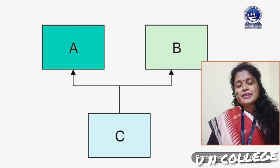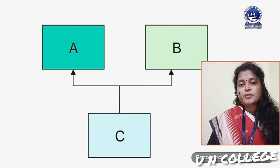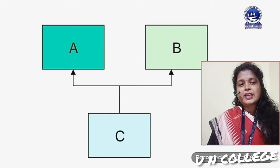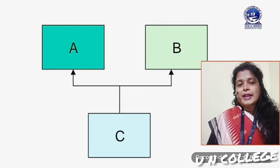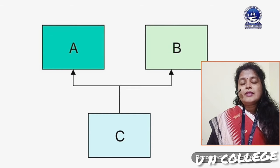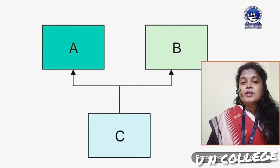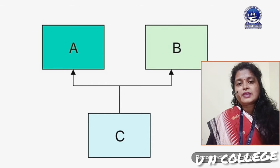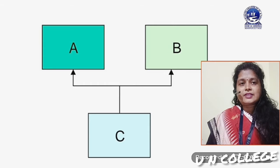Here I have represented a diagrammatic way to show what multiple inheritance looks like. You can see that I have used three different classes: A, B, and C. Here A and B are the parent classes and C is the child class. It means that class C is derived by using multiple classes. You may use more than two parent classes as well.